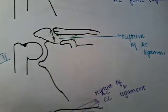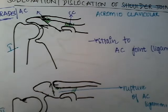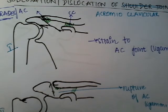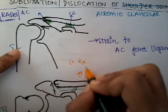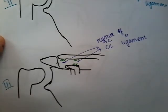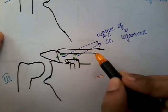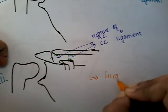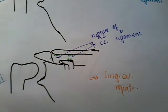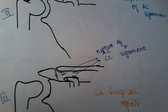Treatment depends on the grade. For grade 1 and grade 2, since it is only a strain or partial ligament injury, rest allows it to resolve easily. For grade 3, because there is rupture of both the acromioclavicular and coracoclavicular ligaments, the clavicle and scapula have no attachment, so surgical repair is required.